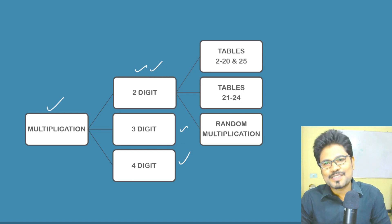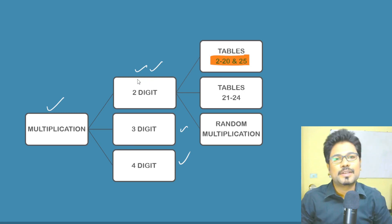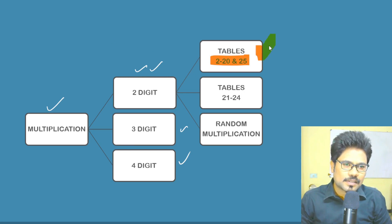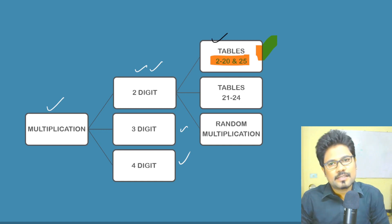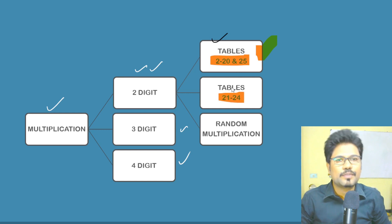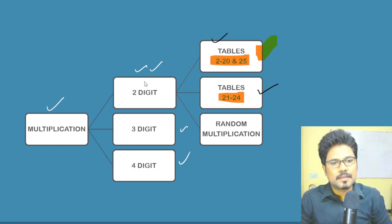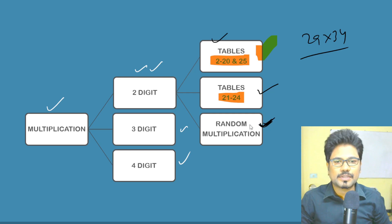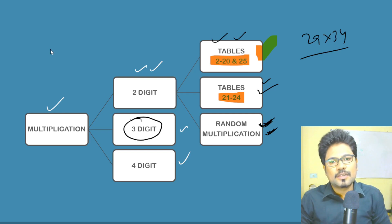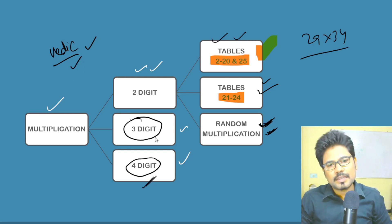Let us start with 2 digits. First, I am going to use tables — 2 to 20 and the 25th table. And don't worry, I am going to help you with 1 to 20. After that, you will see random multiplication, like 29 times 34. We will do this in later sessions. Next, 3 digits — Vedic multiplication. And 4 digits — we will do with Vedic multiplication as well.